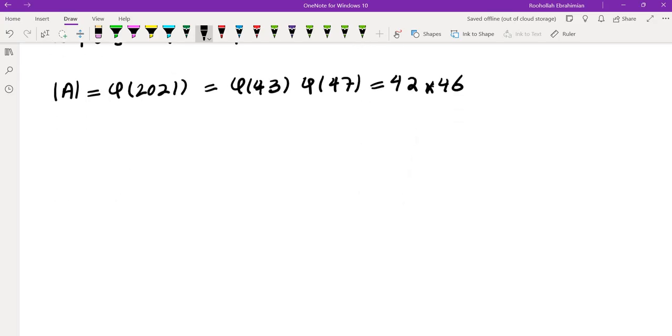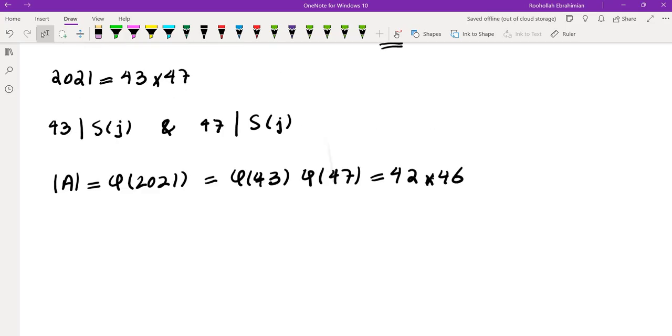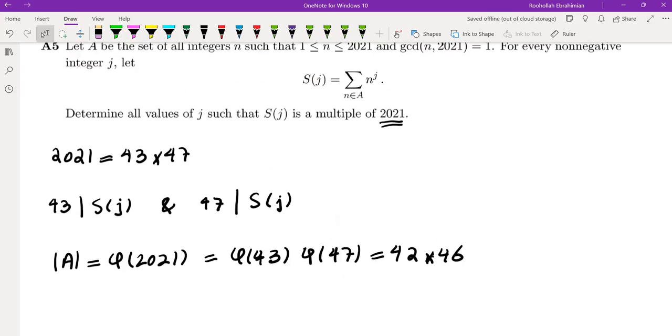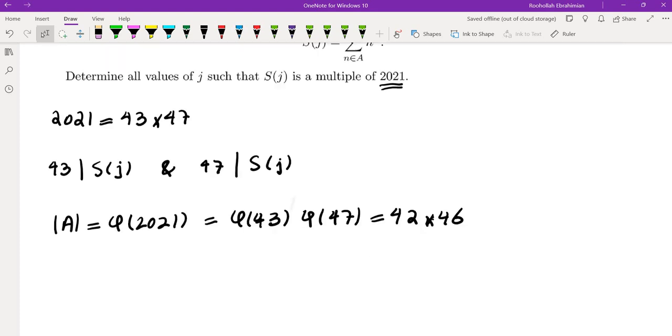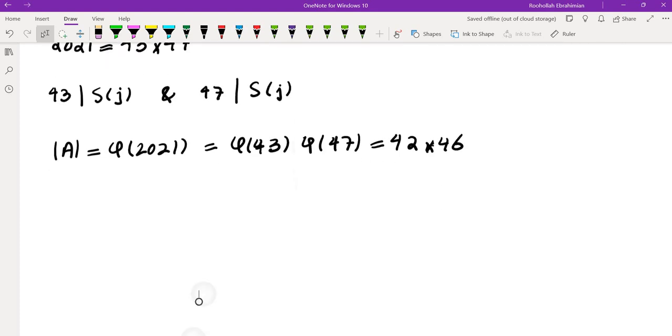Now by Chinese Remainder Theorem, I know that for every pair of remainders, I have one element in this set. So what does it mean?